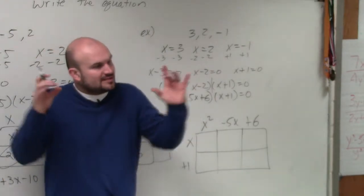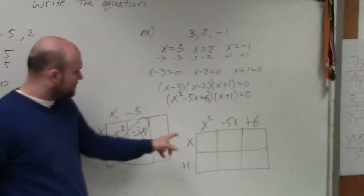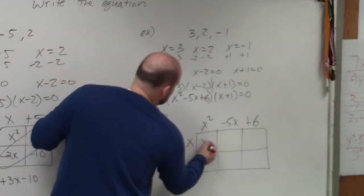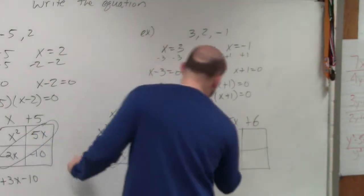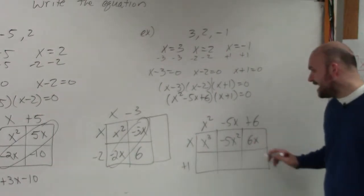All we're doing, if you guys like the box method, is if you just multiply each box. Just focus on one box at a time. x times x squared is x cubed. x times negative 5x is negative 5x squared. x times 6 is 6x.